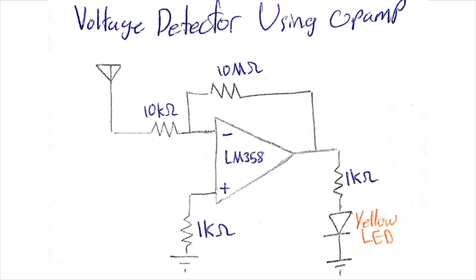Building a differential amplifier will provide amplification to the input signal coming from the antenna. I've chosen 10 mega ohms for the feedback resistance and 10 kilo ohms for the inverting input resistance, which will give me a gain of 1001.